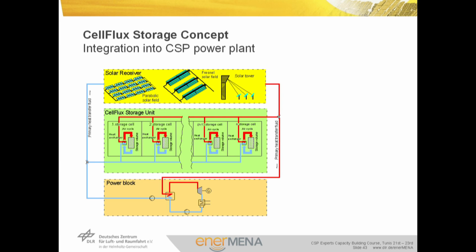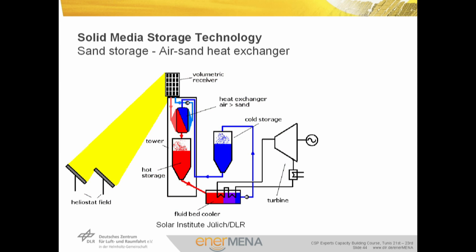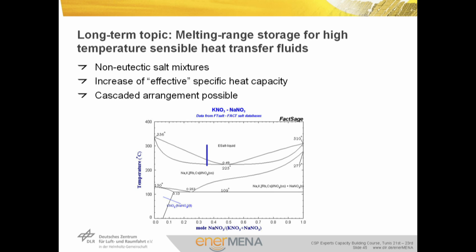This picture shows the integration of the Cell Flux Storage Concept into a CSP plant, where a storage unit is composed of various storage modules operated in parallel. Another solid media storage concept under development uses sand as storage material, with energy transferred to the working fluid by heat exchangers, similar to two-tank molten salt systems. Another concept under development uses non-eutectic salt mixtures as storage material, where the phase transition takes place over a wider temperature range, resulting in higher effective specific heat capacity.